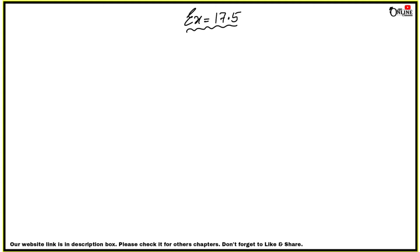So here is the first problem. The diameter of a metallic sphere is 6 cm. The sphere is melted and drawn into a wire of uniform cross section. If the length of the wire is 36 meters, find its radius.